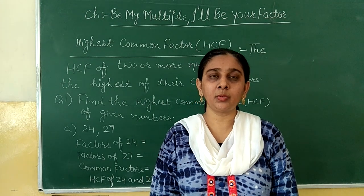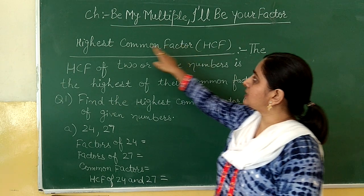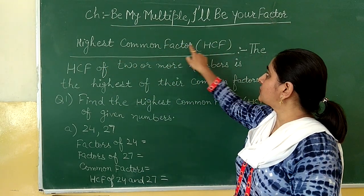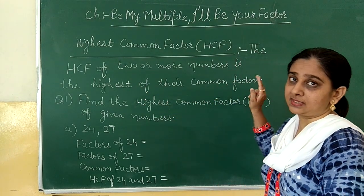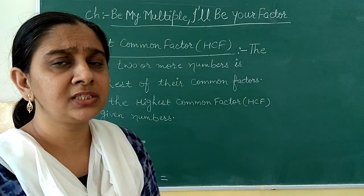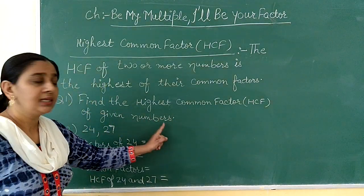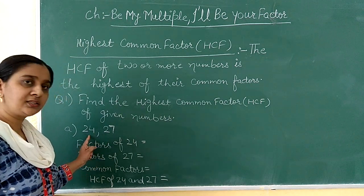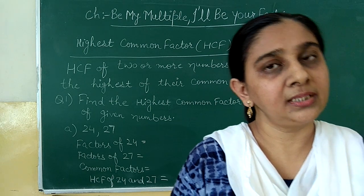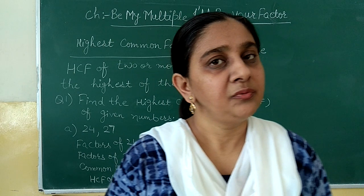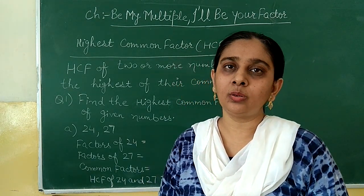Now children we are going to learn about the concept of Highest Common Factor. In short form we call it HCF — H stands for highest, C stands for common, and F stands for factor. The HCF of two or more numbers is the highest of their common factors. Our question is: find the highest common factor of 24 and 27. First we will find their factors, then their common factors, and then from the common factors we will find the highest common factor. So first of all we are writing all the factors of 24.